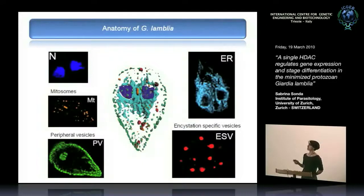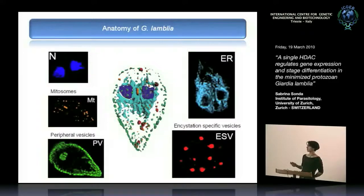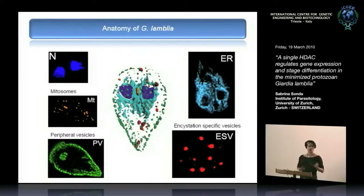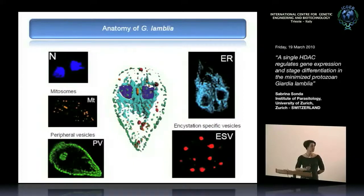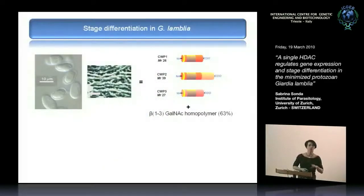The ER is known from its characteristic perinuclear staining. ESVs — encystation-specific vesicles — are very peculiar organelles specific for the encystation process, when the trophozoite becomes a cyst. As I mentioned, there is no Golgi in Giardia, but these are Golgi-equivalent organelles with Golgi-like characteristics that appear only and exclusively during the encystation process. It is as if the parasite makes exactly what it needs at the precise moment when it is needed, which will be the main topic of my research.